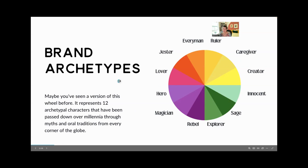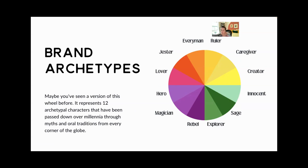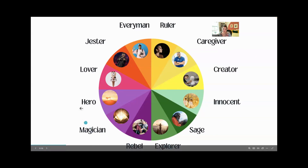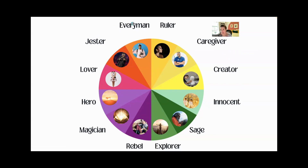So these are the 12 archetypes. Maybe you've seen a version of this wheel before. It represents 12 archetypal characters that have been passed down over millennia through myths and oral traditions from every corner of the globe. They're very familiar from Star Wars, from the Marvel franchise, from Neil Gaiman's books — people are very drawn to epic stories with these archetypal characters. You've got the ruler, the caregiver, the creator, the innocent, the sage, the explorer, the rebel, the magician, the hero, the lover, the jester, and the everyman — which I regret not saying 'every person,' but that embedded sexism is really hard to shake.